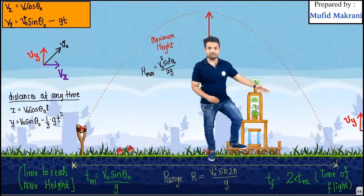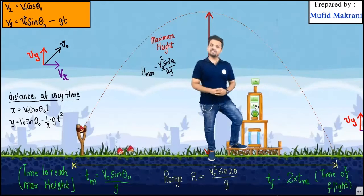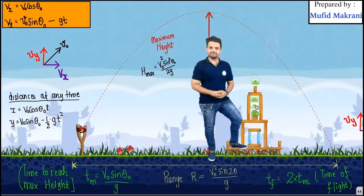It will complete its full path and we call it a range of projectile. A range of projectile is given by the formula v naught square sine 2 theta naught divided by g.